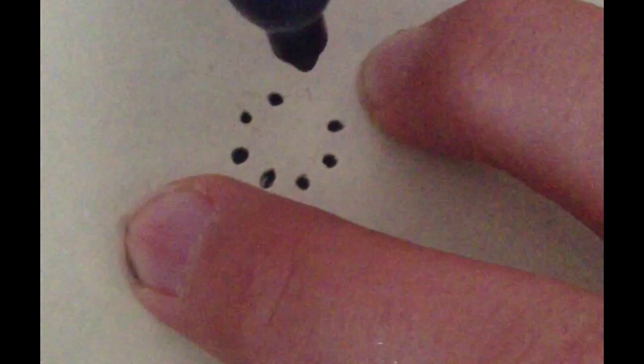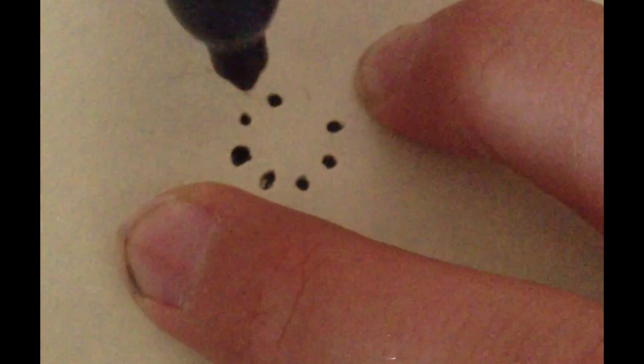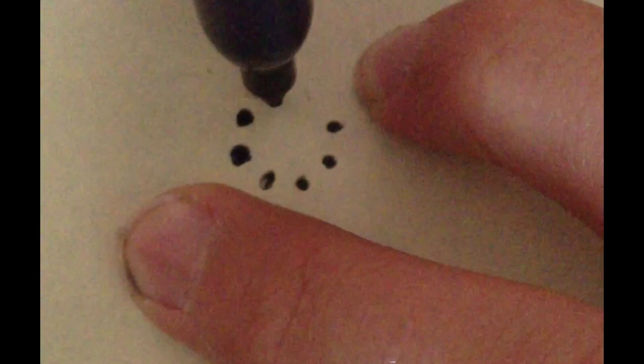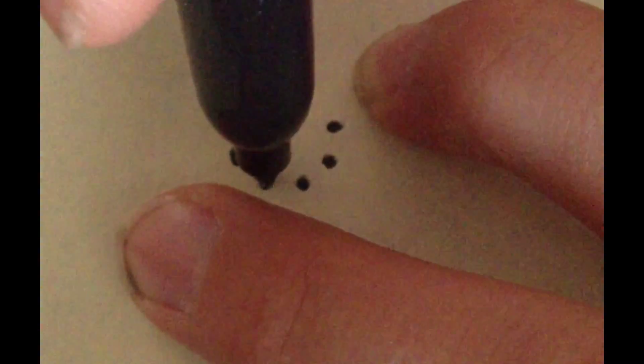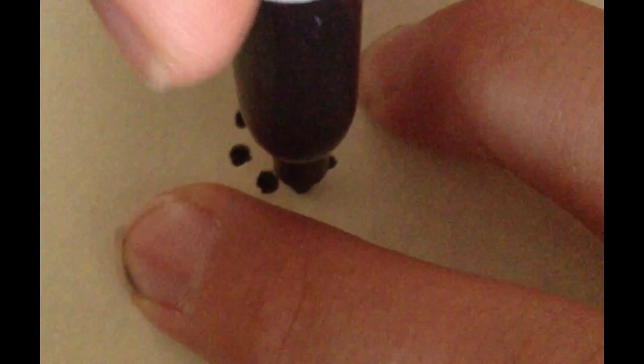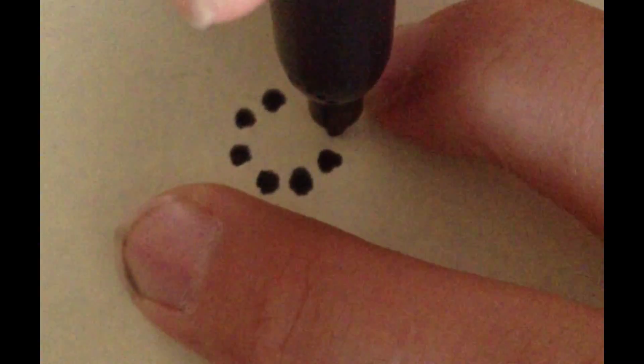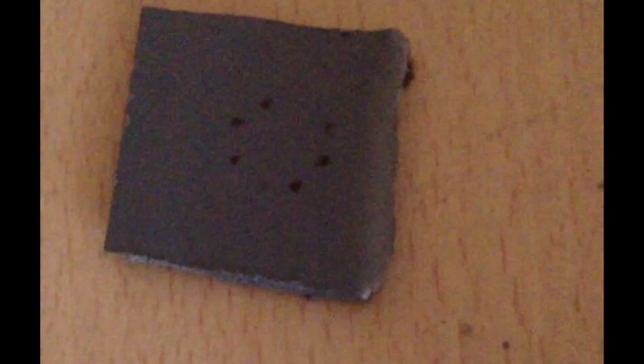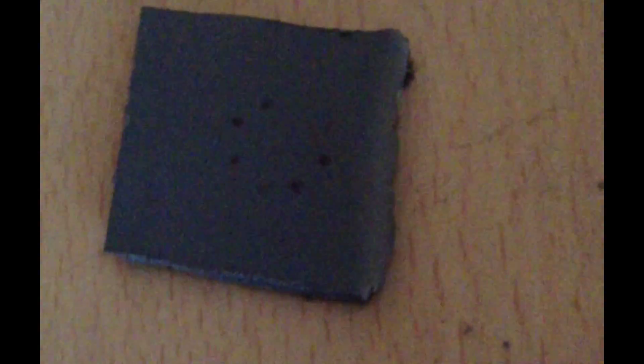When you are done with that, you will take the base and put the stencil over the base. Then you can take a sharpie marker, or whatever you choose to use, and draw in each hole. So that way you can put the accurate pin layout on to the base.